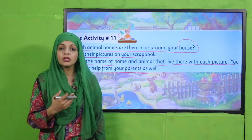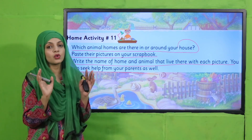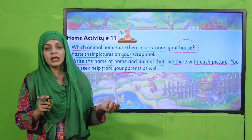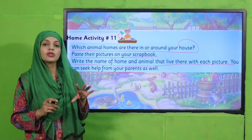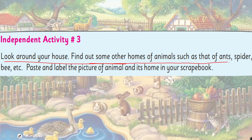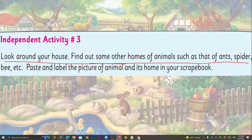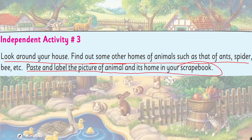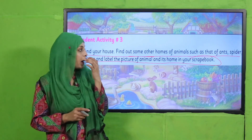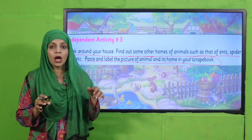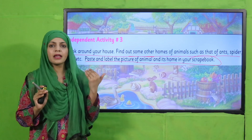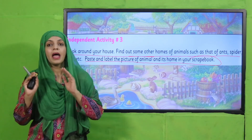Aapke ghar ke idgird kaun se janvar hain aur wo kahan rehte hain — paste their pictures and homes in your scrapbook. For independent activity: look around your house and find some other homes of animals such as those of ants, spiders, and bees. Spiders make webs, ants make ant hills zameen mein, and bees make beehives. Search other animals too and paste their pictures with their homes in your scrapbook.